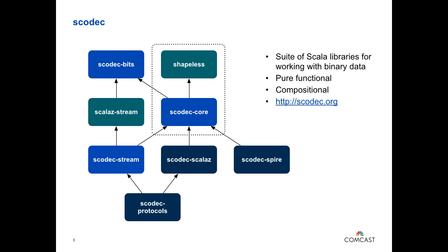S-Codec is a very modular library, or suite of libraries. These are the major modules. The light blue items are the primary modules. S-Codec bits is a super stable library just for immutable persistent data structures for working with binary. If you ever had to pass around a byte array and got bit by equals not being defined semantically — like reference equals instead — there's something for that in S-Codec bits, along with base conversions, cyclic redundancy checks, and similar things.